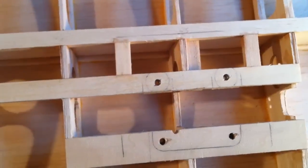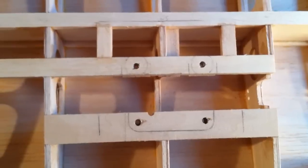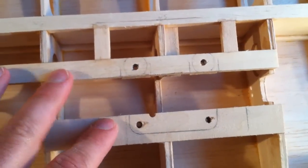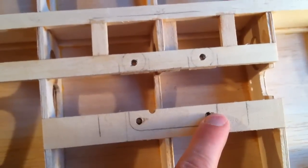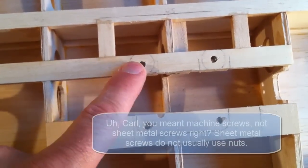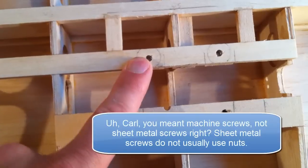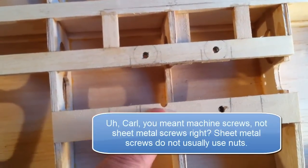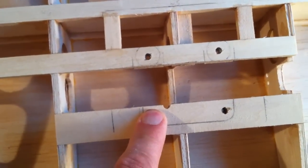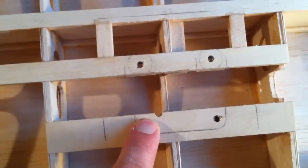So that concludes my modification to adding blind nuts to these landing gear rails versus just either using wood screws or sheet metal screws with lock nuts which would have been a little cumbersome and unwieldy to try and get those in after the sheeting had been put on.